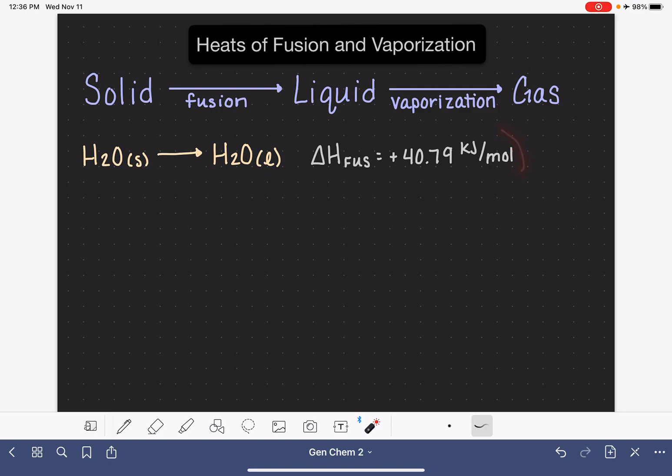The units, kilojoules per mole, specifically means that it takes 40.79 kilojoules for every one mole of water in the solid state. The reason that I know this is per one mole of water is because that's the stoichiometric coefficient for the balanced equation that is being described by this delta H of fusion. One of the cool things about the delta H of fusion is that we can actually use it to help us understand the reaction that proceeds in the reverse direction.